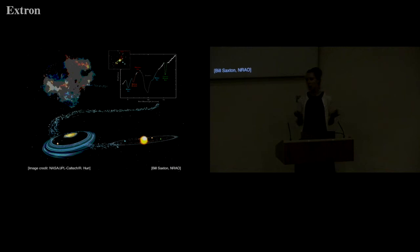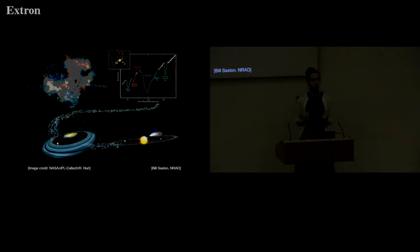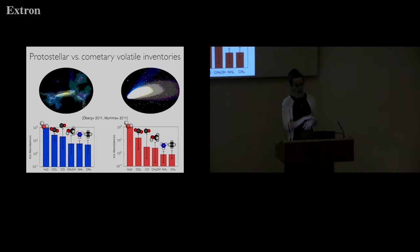We also have some idea of the volatile budget at the end of protoplanetary disks, because in our solar system we have reservoirs of our own protoplanetary disk: comets. We think comets are basically ice boxes preserving the volatiles that were there when planets were assembling. So we know what's going on before disks and at the end state of disks, and maybe we can use those two measurements to narrow down at least the ranges of possible volatile budgets during planet formation.